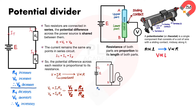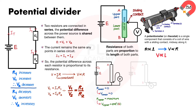If the sliding contact is at point B, the resistance of the lower part is zero, and so the potential difference across it is also equal to zero. Meanwhile, the resistance of the upper part is at maximum, and so the potential difference across it is equal to the EMF.